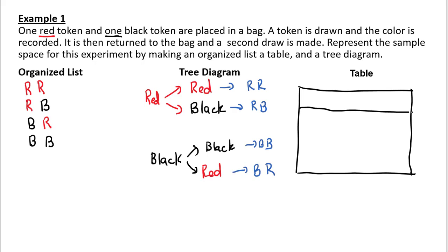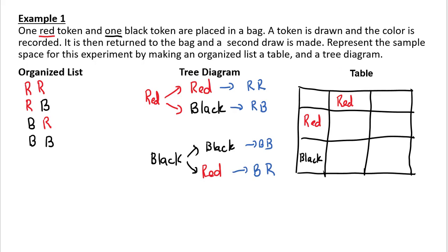In the first column I can have red or black, and in the first row red or black. So we can have red-red, red-black, black-black, and black-red. Each of these three methods is a different way for us to get all of our outcomes, and each one will be meaningful in a different way.